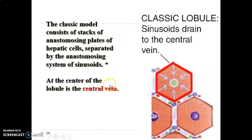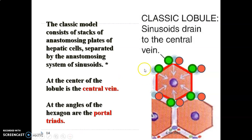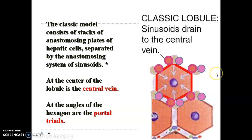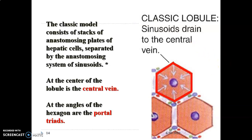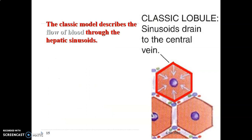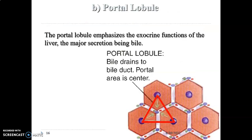You can see at the angles of the hexagon the portal triad, with blood flowing from the portal vein through the sinusoids into the central vein. The classic lobule describes the flow of blood through the hepatic sinusoids into the central vein.